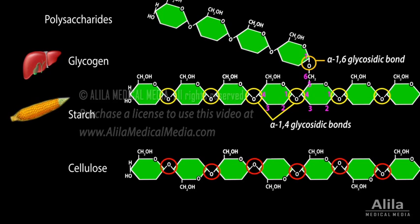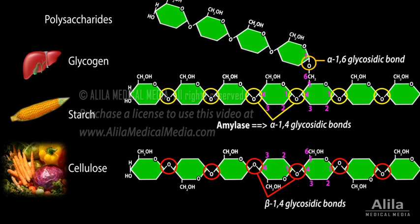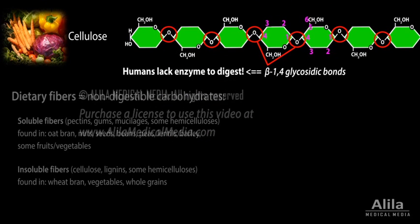Starch in food can be digested by breaking these bonds with the enzyme amylase. Cellulose, the major structural component of plants, consists of unbranched chains of glucose bonded by beta linkages, for which humans lack the enzyme to digest. Cellulose and other non-digestible carbohydrates in food do not supply energy, but are an important part of human diet known as dietary fibers.